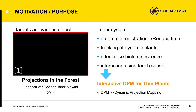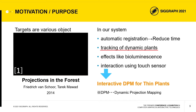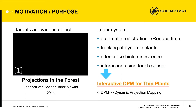It is difficult to project onto dynamic targets. Therefore, our system registers projection areas on targets semi-automatically to reduce time for registration. Our system also tracks dynamic targets. Additionally, we propose effect animations using the motifs of bioluminescence, and these effects change interactively with a touch sensor. With these methods, we propose an interactive dynamic projection mapping system for thin plants.